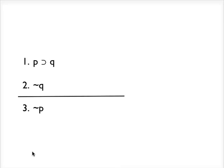What I have here is an argument, and we're going to determine whether or not this argument is valid using a truth table.